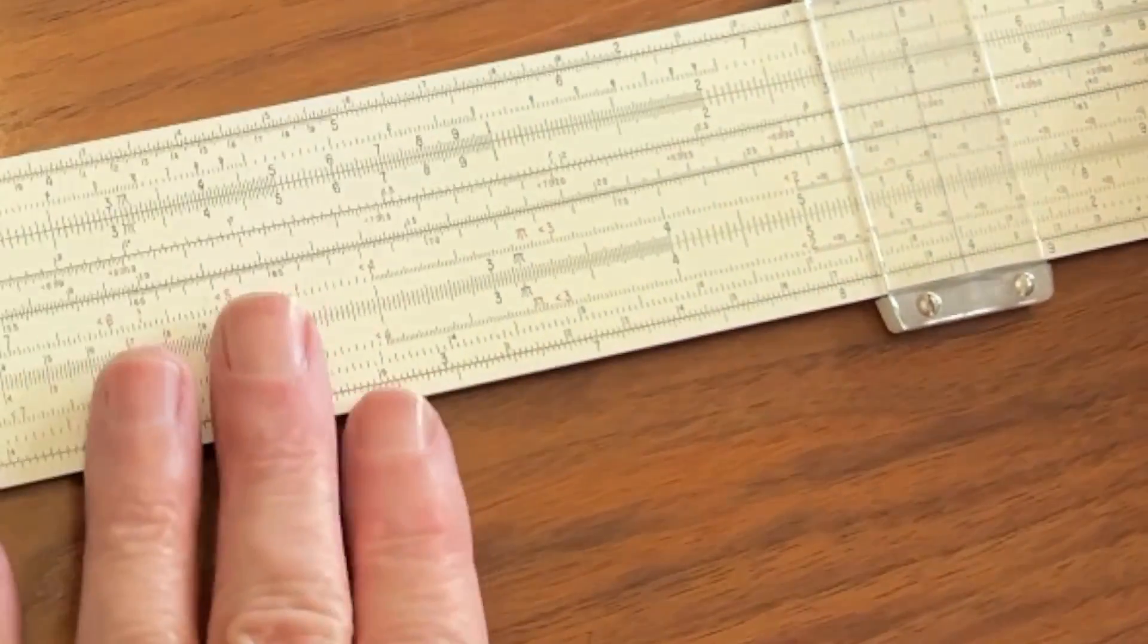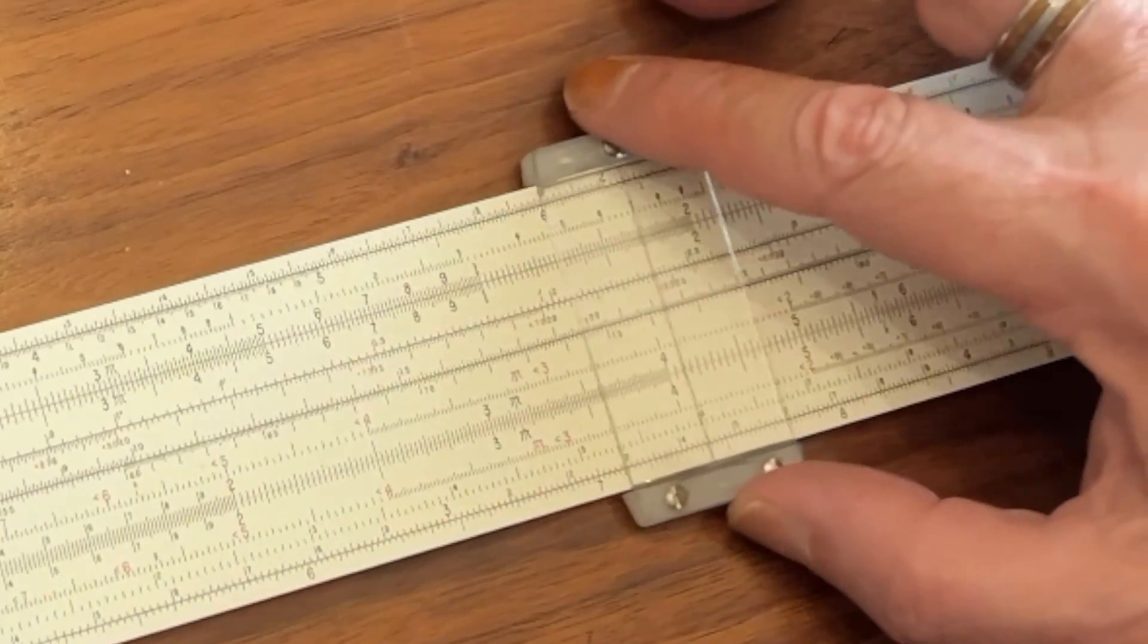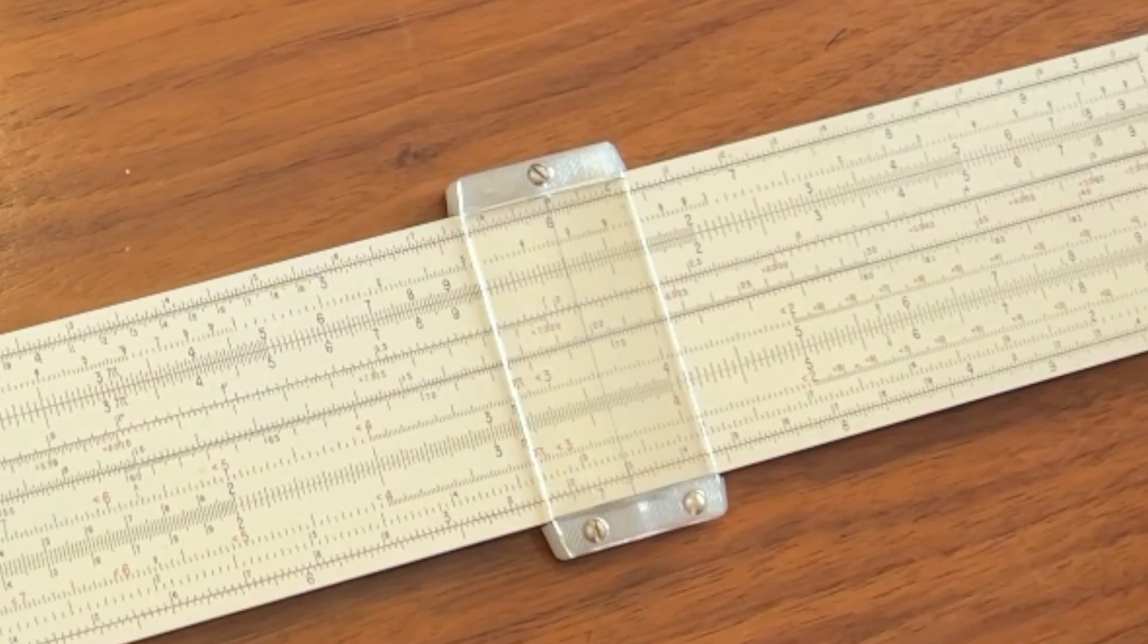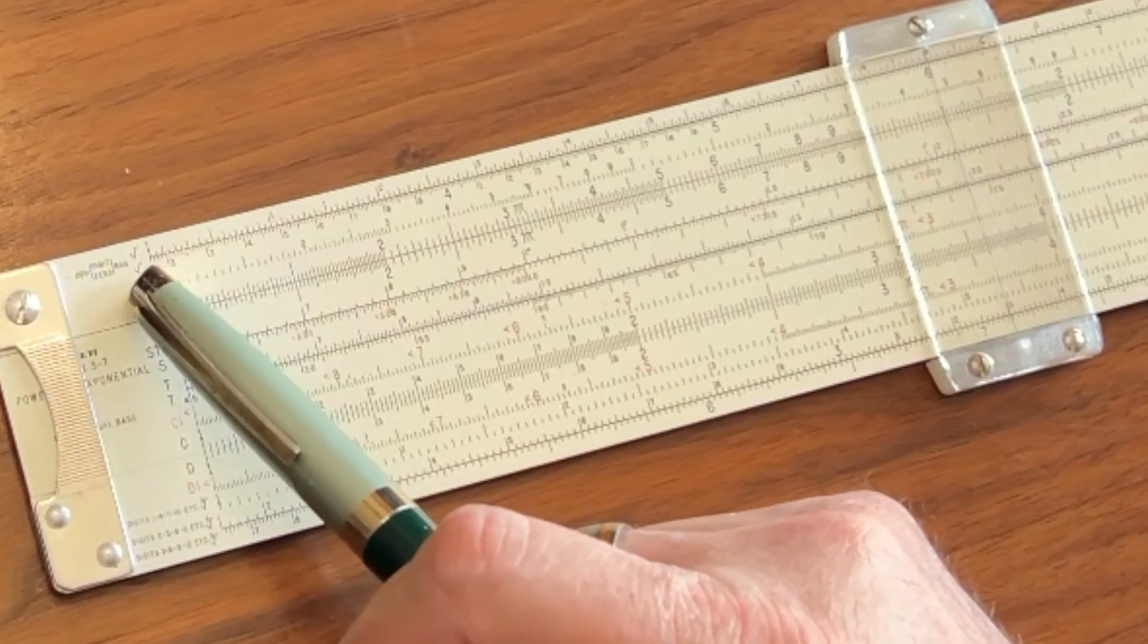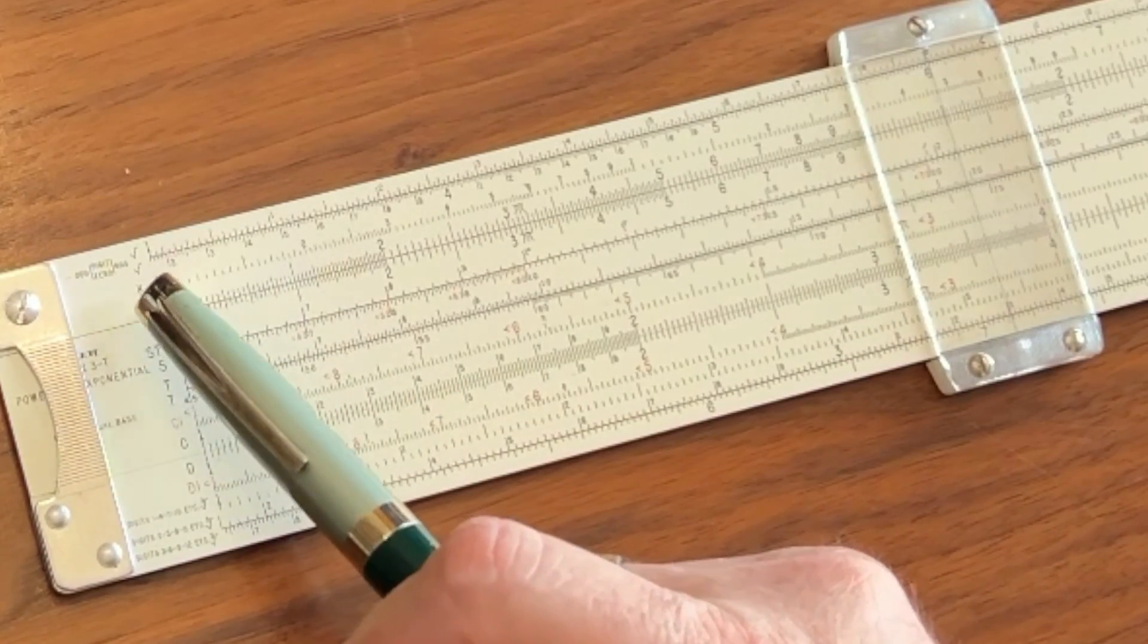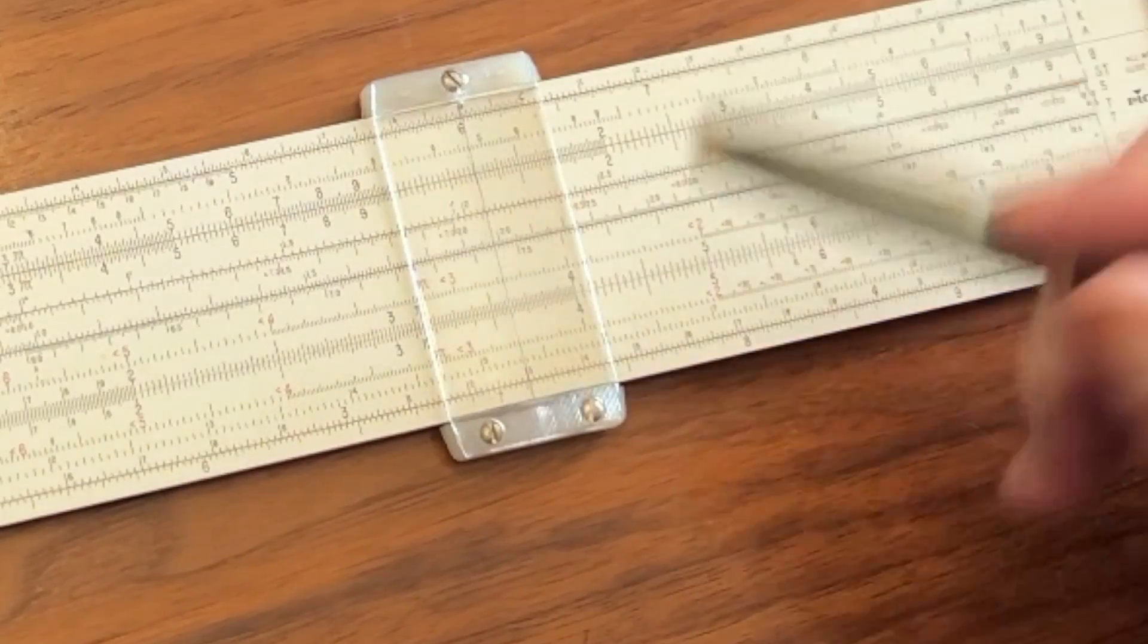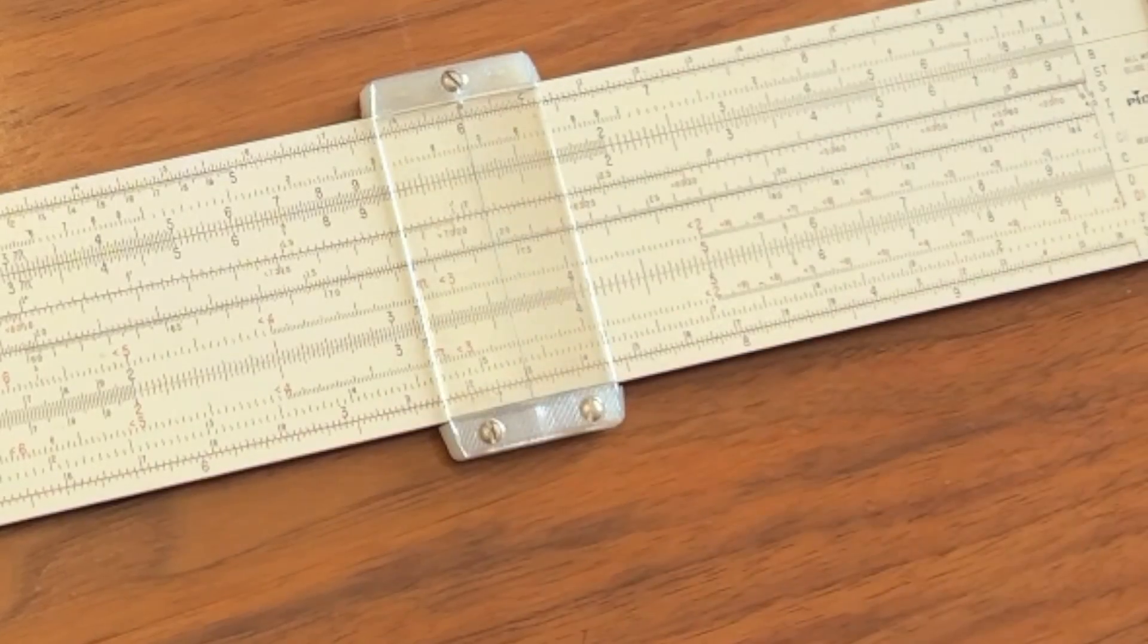Likewise, say we want to find the square root of 36, so we would come over here to 36 on the C scale, and we would read straight up. Now, as you recall, the first set of square root scales were for the numbers from 1 to 10, and the set right underneath it are the numbers from 10 to 100. 36 falls between 10 and 100, so we would read on the lower of the two scales, and we come up to our answer of 6. I don't know about you, but I think that's pretty clever, and that's one of the reasons that on higher-end Pickett slide rules, they have these square root signs.